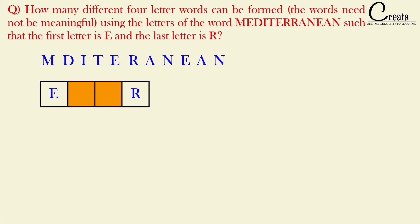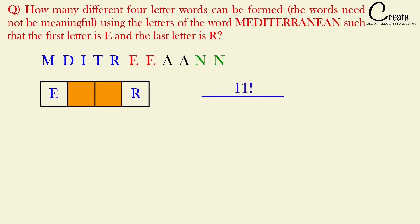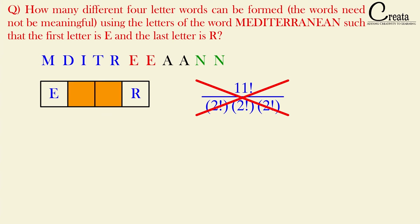The 11 remaining letters include two E's, two A's, two N's, and single M, D, I, T, and R. A tempting but incorrect approach is to apply the repeating-letters permutation formula: 11 factorial divided by (2! × 2! × 2!). However, this is wrong because that formula applies when all letters fill all slots — here we only have two vacant slots, not eleven.